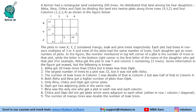It is given that rows X, Y, Z contain mango, teak and pine trees respectively. Each plot had trees in non-zero multiples of 3 or 4, meaning they are positive multiples, and none of the plots had the same number of trees.